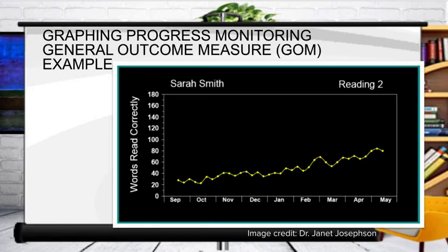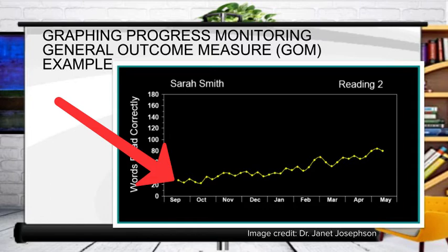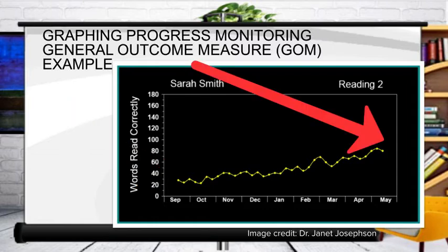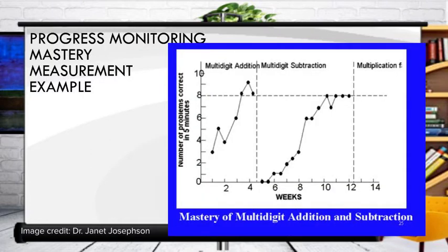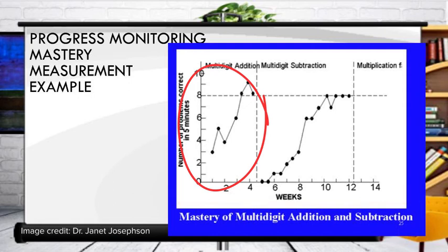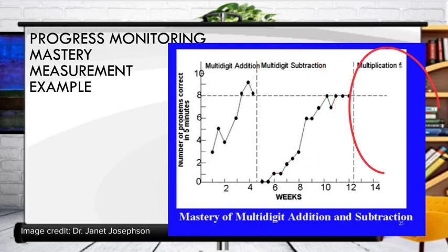Looking at what this looks like graphically: for a general outcome measure, we can see that Sarah starts in October reading about 25 words correctly per minute, and her progress goes up over the course of the school year until by May she's reading about 80 words correct per minute. For a mastery measurement, we can see the student's progress with multi-digit addition, then multi-digit subtraction, then multiplication facts — once we get to mastery of addition, we move to subtraction, then to multiplication.